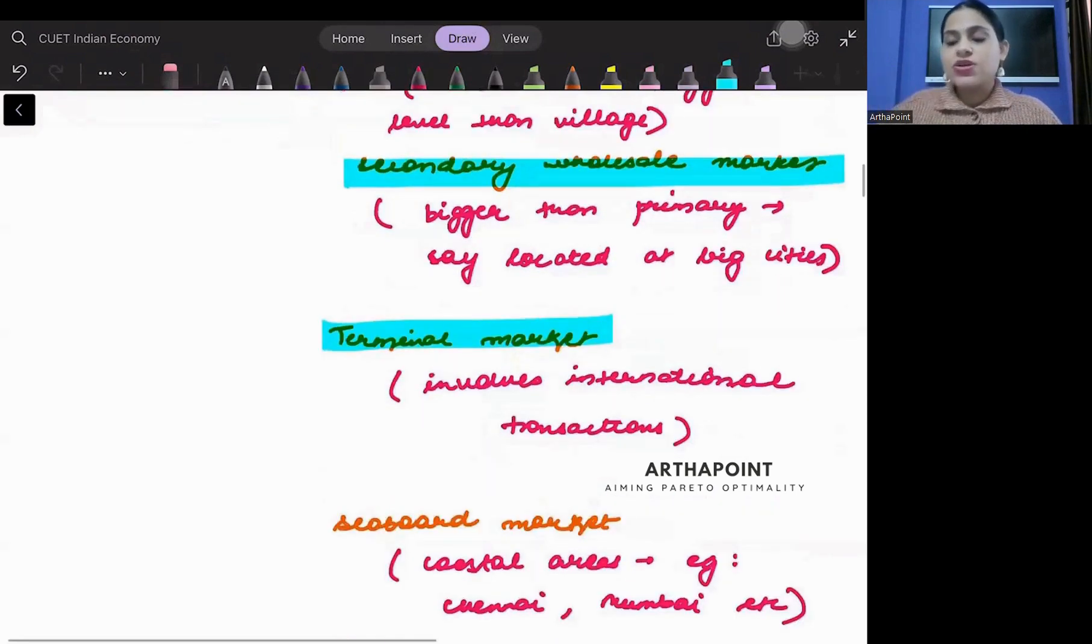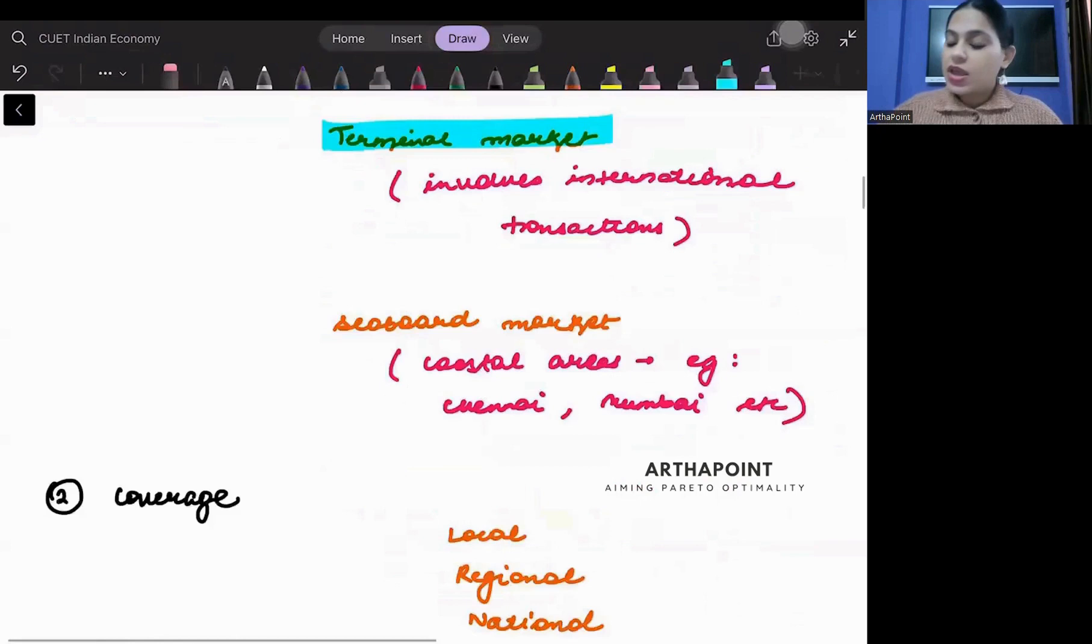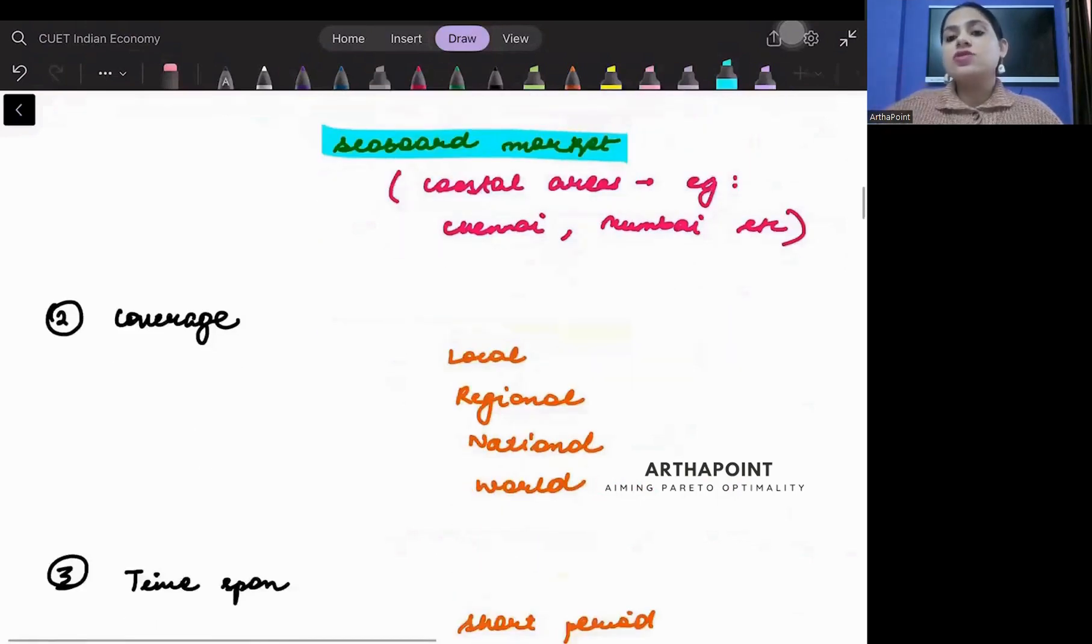Terminal market, as the word suggests terminal, means international transactions ho rehi hai. And seaboard market, which means that it involves some coastal areas like Chennai, Mumbai, et cetera.